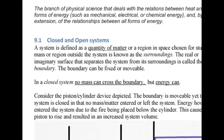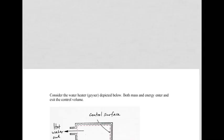To recap: in a closed system, no mass can cross the boundary but energy can. In an open system or control volume, both mass and energy enter and exit the control volume.